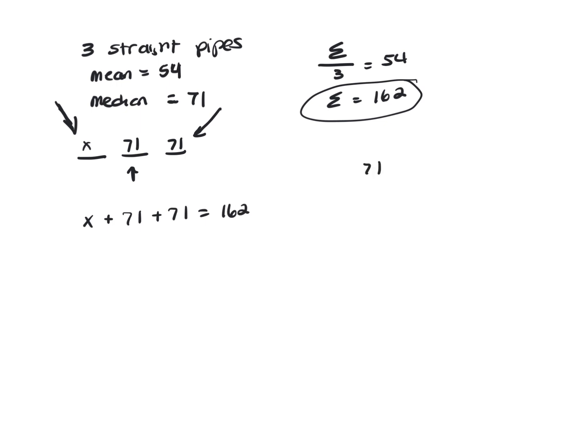So I've got 71 plus 71. That's going to be 142. So X plus 142 is 162. So that means X would have to be 20.